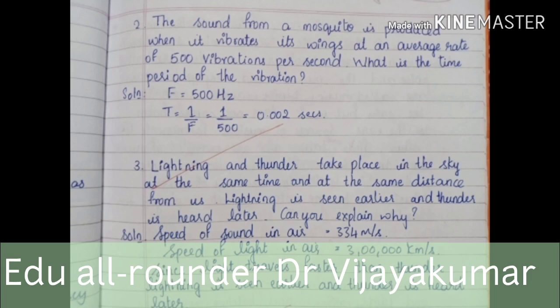Lightning and thunder take place in the sky at the same time and at the same distance from us. Lightning is seen earlier and thunder is heard later. Speed of sound in air is 334 m per second, and speed of light in air is 300,000 km per second. Since light travels faster than sound, lightning is seen earlier and thunder is heard later.